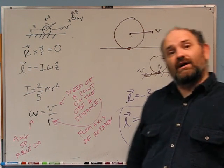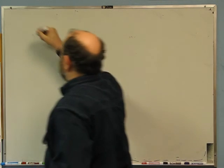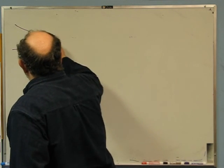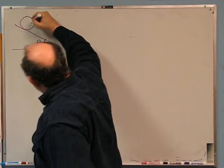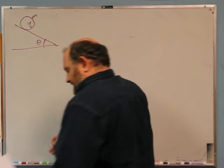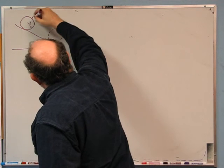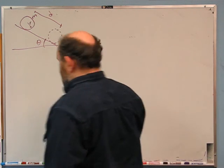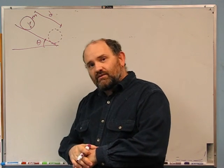That's the first problem. Now the second problem: a wheel — assume it's a ring — rolls down a hill. There's a theta in there somewhere, and the wheel has mass m and radius r. It's a ring of radius r and mass m. It starts at rest and moves through a distance d down the hill. Use conservation of energy to figure out the speed of the wheel after it's moved through distance d.